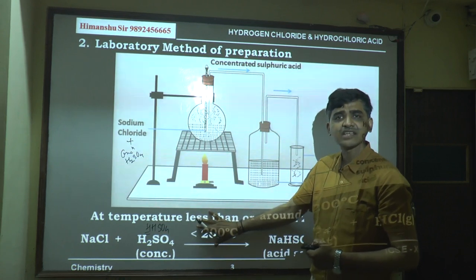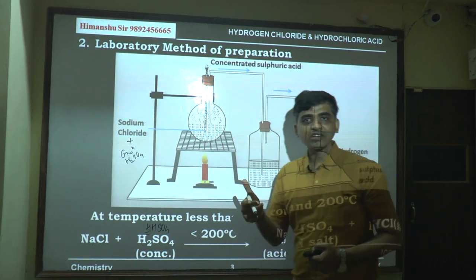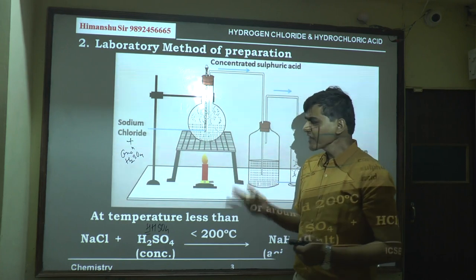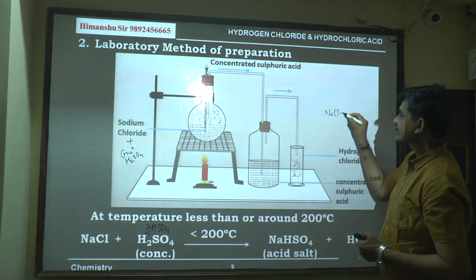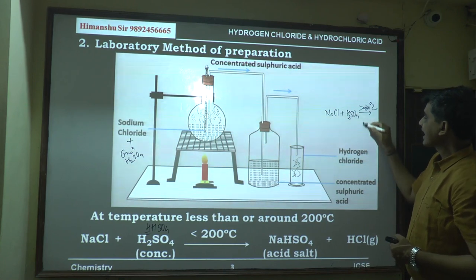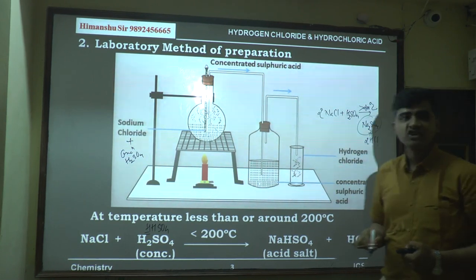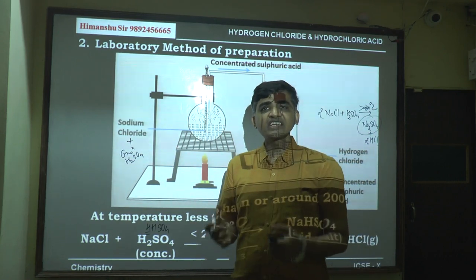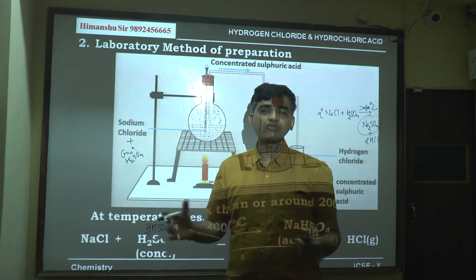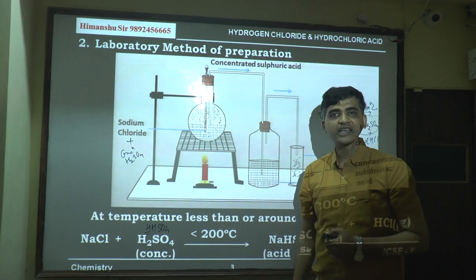Why do we keep the temperature below 200°C? If the temperature exceeds 200°C, first the apparatus may break, second there is wastage of fuel, and most importantly when NaCl and H2SO4 are heated above 200°C, the product is Na2SO4 (sodium sulfate) plus HCl. This sodium sulfate forms a hard, insoluble, sticky mass that is very difficult to remove and sticks to the apparatus.